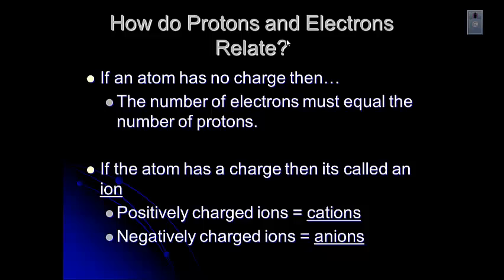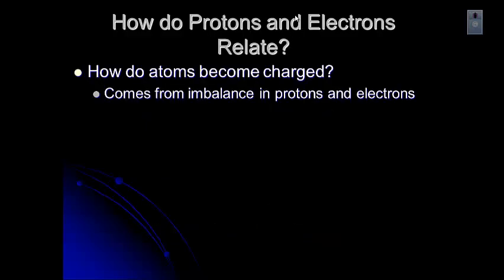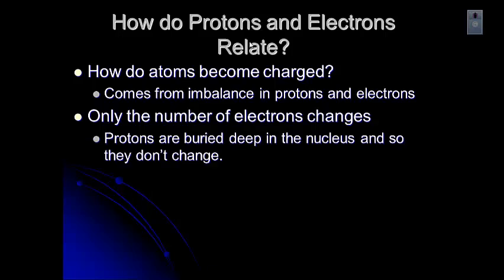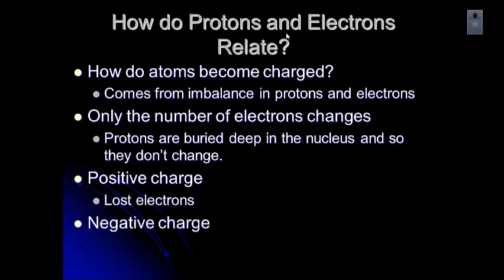Let's talk about how atoms do become charged. It's that imbalance in the protons and the electrons. We just talked about the fact that protons define what an element is, so they can't really change. The only way that the charge of an atom can change is if the number of electrons changes. Protons are really down deep in the nucleus, so it's really difficult for those to change. The electrons are out around in the cloud. It's much easier for them to change. When you have a positive charge, it means that you have more protons than electrons, and so that means you've lost electrons. If there's a negative charge, it means that you have more electrons than protons. So you've gained electrons. Remember that the protons cannot change.